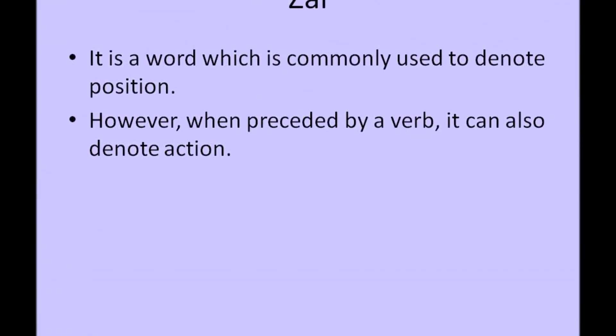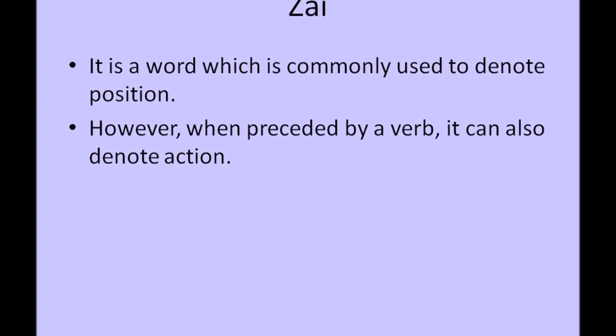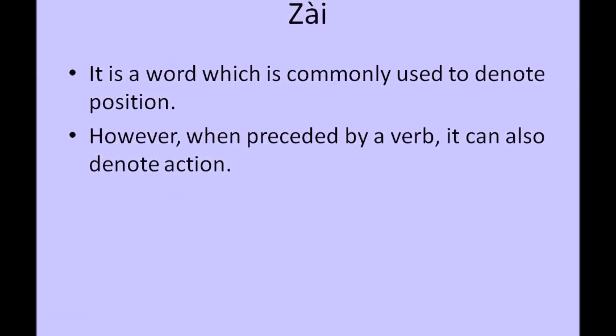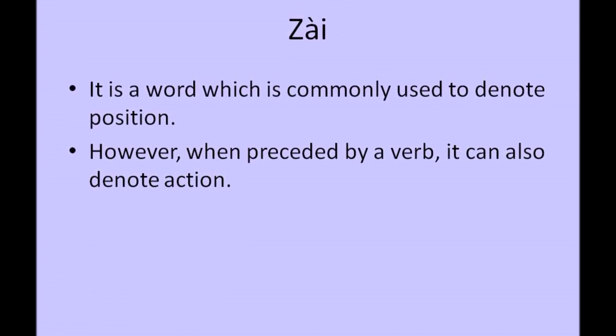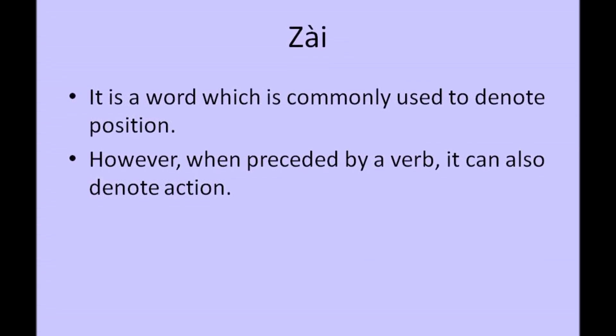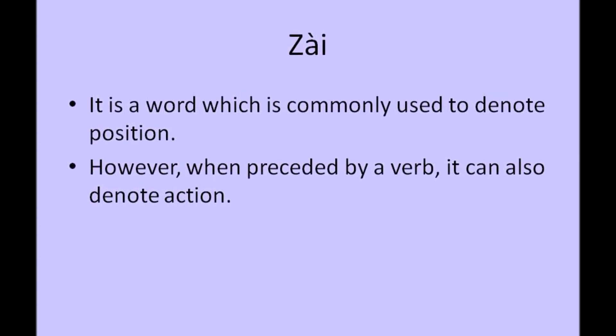We will conclude this lesson with a simple, yet useful grammar expression. 太 is a word which is commonly used to denote position. However, when preceded by a verb, it can be used to denote action. Thank you for the patient learning. Due to time constraints, the detailed explanation of 太 will be continued in the next lesson. Until then, revise the current lesson and feel free to ask queries related to the subject in the comments section.